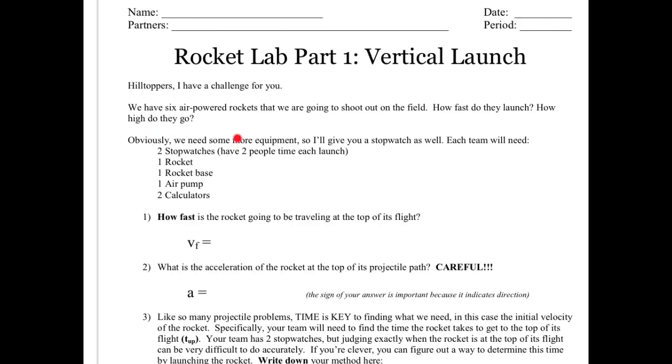Before you go outside, you need to make sure your team has all of the items listed here, including two stopwatches, a rocket body, a rocket base, an air pump, and at least two calculators. You'll probably want to bring a folder and something to write with as well so you can get all your work done outside.